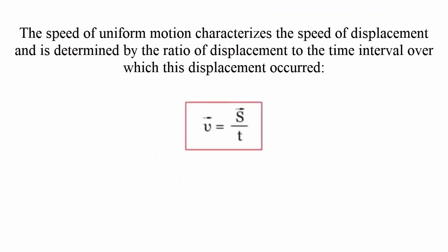The speed of uniform motion characterizes the swiftness of displacement and is determined by the ratio of displacement to the time interval over which this displacement occurred.